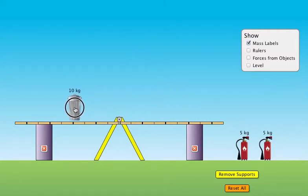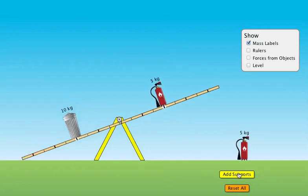For instance, in this example, I'm going to put a 10 kilogram trash can 2 meters from the support and a 5 kilogram object also 2 meters from the support. What's going to happen when I remove the support is that the system is going to rotate counterclockwise.